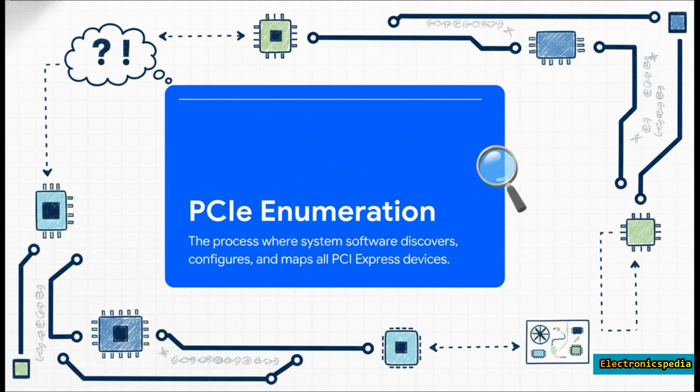Your system software, like the BIOS, goes on this methodical hunt through the entire PCIe network. It's asking each component 'Hey, who are you?' giving it a unique address and handing out the resources it needs to do its job, like memory or a way to get the CPU's attention. Once that complete map is built, it's handed over to your operating system.